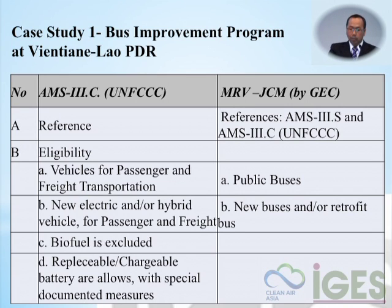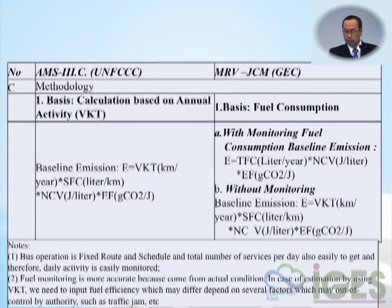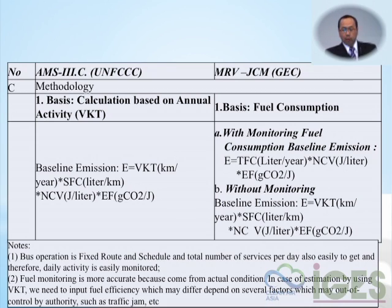Regarding eligibility: UNFCCC covers vehicle passenger and freight, while the MRV for JCM focuses on public buses and new electric or hybrid vehicles for passenger and freight — specifically new or retrofit buses. Biofuel is excluded in the UNFCCC method, and replaceable or chargeable batteries are allowed with special documented measures in the JCM approach.